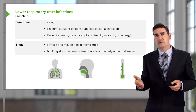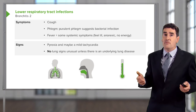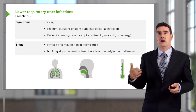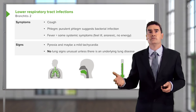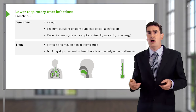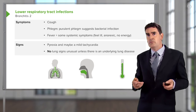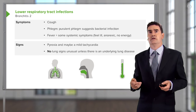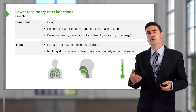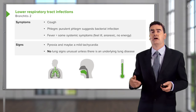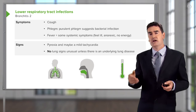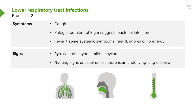When you examine the patient, there aren't many signs — pyrexia and maybe a little tachycardia, but there will not be much in the way of lung signs unless there's an underlying lung disease. Because tracheobronchitis hasn't reached the alveoli, you're not going to hear it when you listen to the lungs.